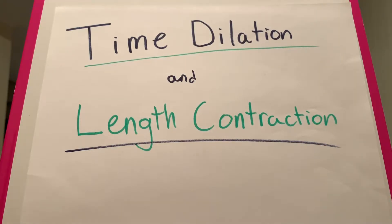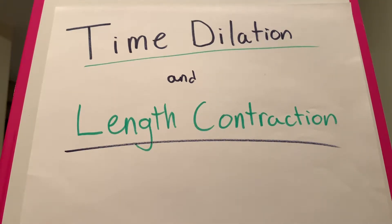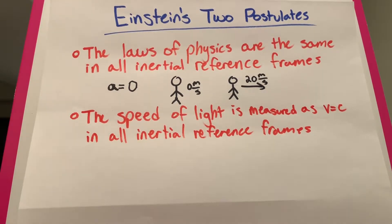Hello, welcome. Today I'm making a video on time dilation and length contraction. It sounds very intimidating, but it's actually not as frightening as it seems. It's just a bit of an application of Einstein's theory of special relativity. To fully understand time dilation and length contraction, you need to understand Einstein's two postulates of special relativity, which I'm going to go over very briefly. The first postulate states that the laws of physics are the same in all inertial reference frames.